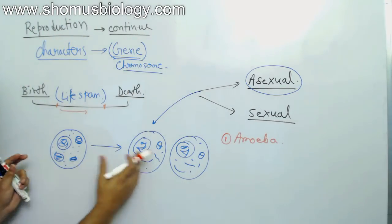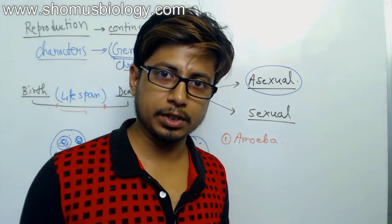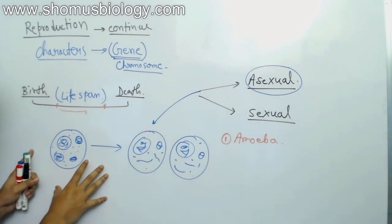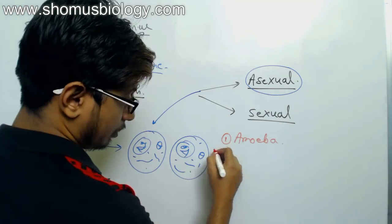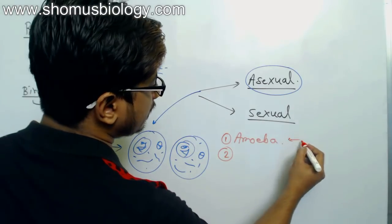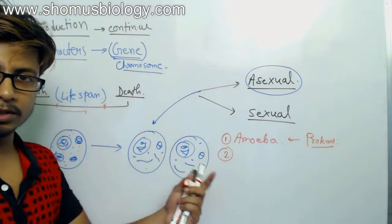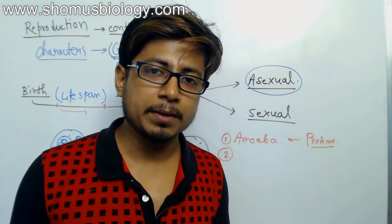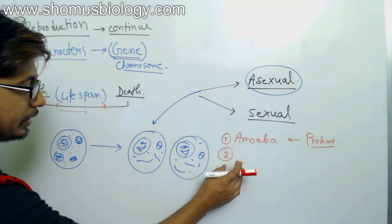An example of asexual reproduction is amoeba. Amoeba can split into two — we call this binary fission. Binary fission means one cell divides into two, just as we saw. Among eukaryotes there are also examples of asexual reproduction. Amoeba is a type of organism without a membrane-bound nucleus, yet it can divide into two.